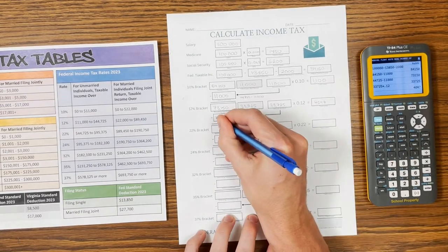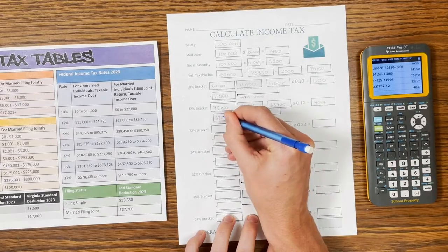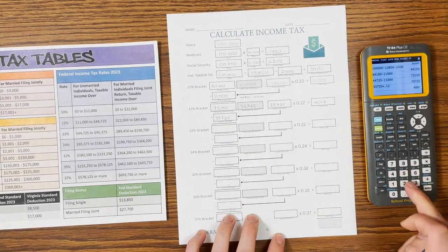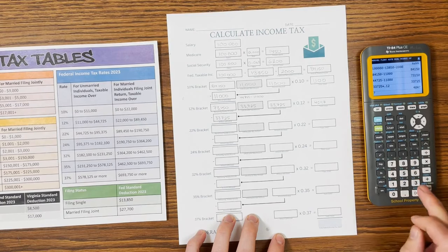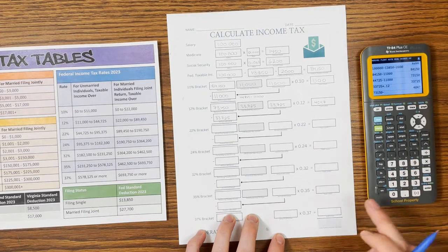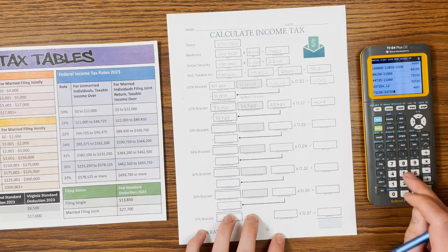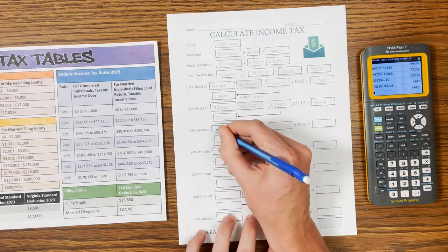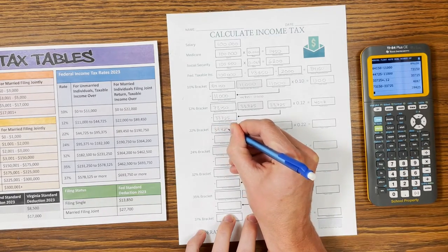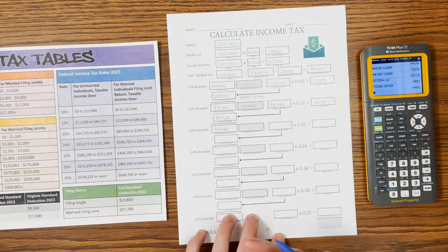We've taxed this $33,725, so that does not get taxed again. We subtract it from our remaining taxable income. So I have $73,150 minus $33,725, so I now have $39,425 left of taxable income.